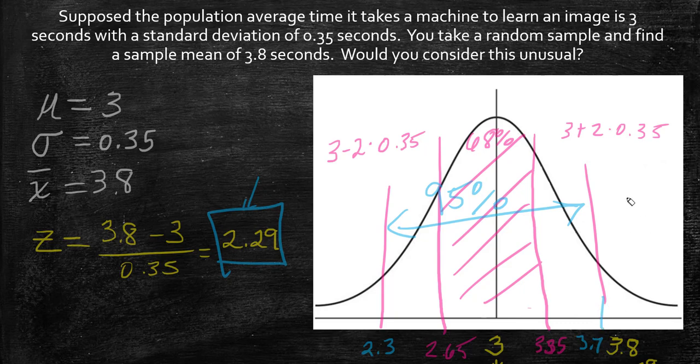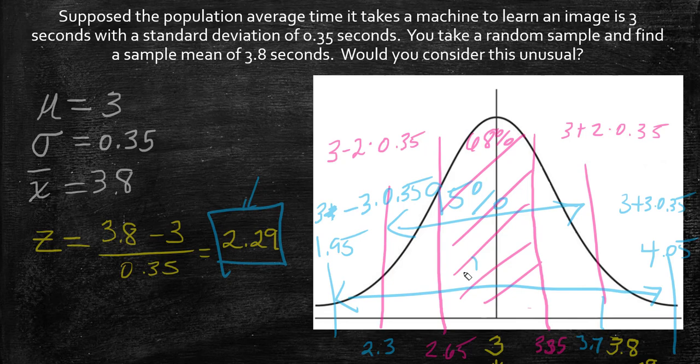You could complete this with 3 standard deviations. Three times 0.35 gives you 4.05, and the lower bound is 3 minus 3 times 0.35, which is 1.95. That would be 99.7% of your data. If you have something past 3 standard deviations, either above or below,